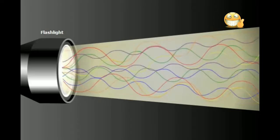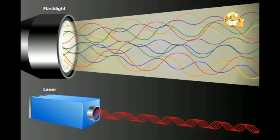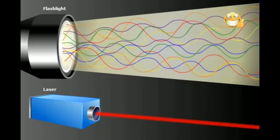An ordinary light source produces many different wavelengths of light that go off in all directions. A laser is able to generate light waves of a single wavelength, all in step with each other and all traveling in the same direction.